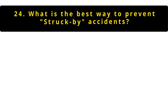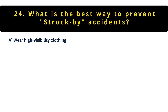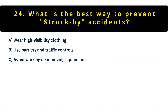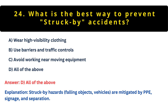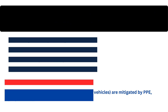Question 24: How do you prevent struck-by accidents? Option A: High-visibility clothing. Option B: Barriers and traffic controls. Option C: Avoid moving equipment. Option D: All of the above. The best answer is D — all of the above. Struck-by incidents are among construction's deadliest hazards, requiring multiple layers of protection, including PPE, engineering controls, and safe work practices.